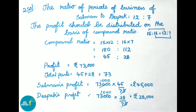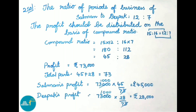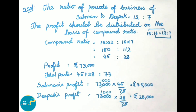Deepak's profit equals total profit 73,000 into 28 by 73. Since 73 times 1,000 is 73,000, multiply 1,000 into 28, that is 28,000 rupees. Therefore, Deepak's profit is 28,000 rupees.